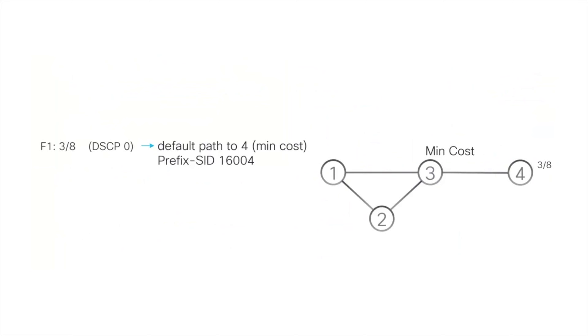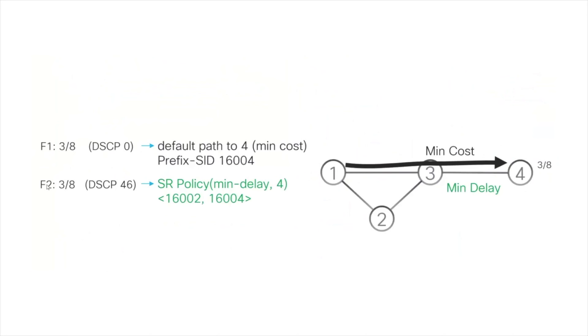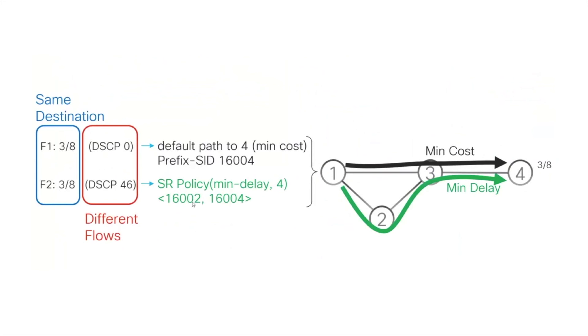Pictorially, consider prefix 3/8: one flow to 3/8 can follow the mean IGP path, while another flow to the same prefix minimizes delay to the destination. We have one destination prefix — 3/8 — but different intents or flows, demonstrating the need for per-flow automated steering.